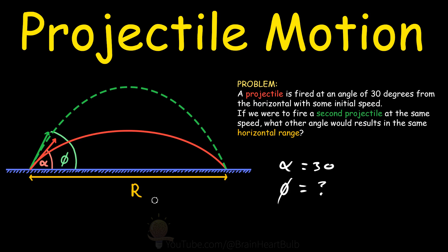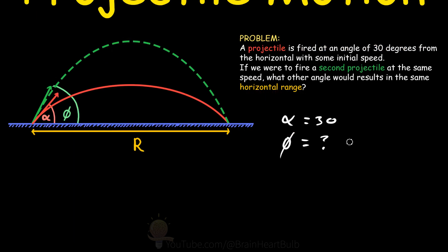But we know that its range is the same as the red projectile, and we also know that the initial speeds of both projectiles are equal. So what's the first step we need to do to solve this problem?